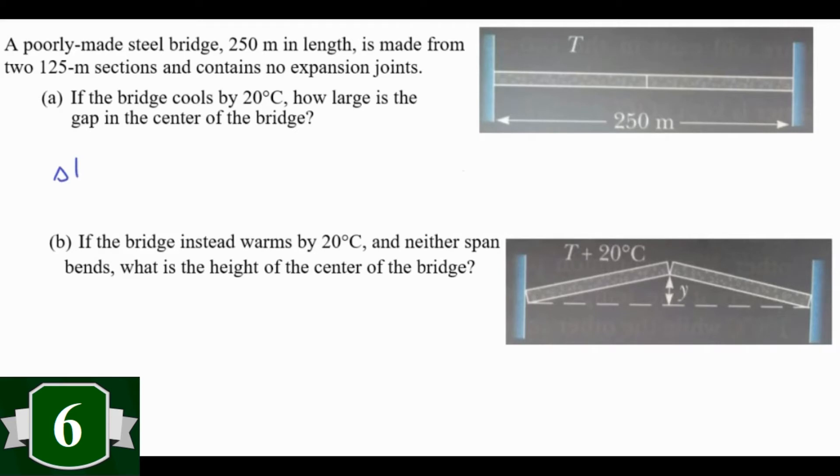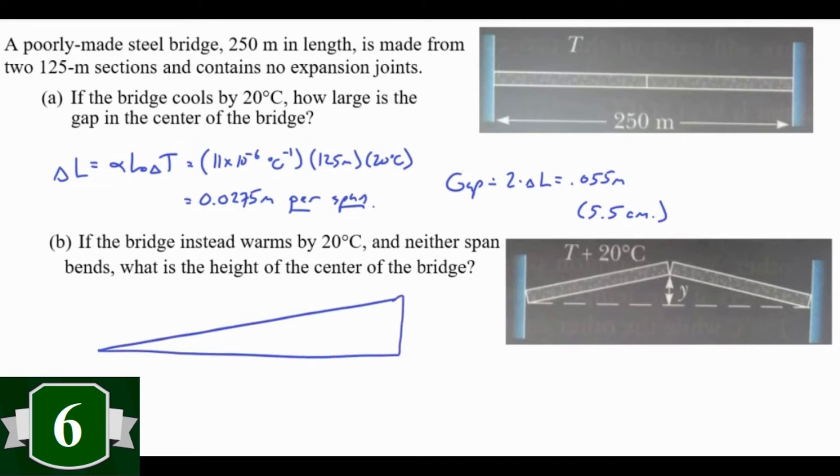Part A is just thermal expansion: Delta L equals alpha L naught Delta T. Plug in alpha for steel, plug in 125 and 20 degrees. We get 0.0275 meters per span. The gap is two spans, so double that to get 0.055 meters or 5.5 centimeters. For the second problem, that same math applies, only now we've made a triangle with a base of 125 and a hypotenuse of 125.0275. If we use the Pythagorean theorem and solve for height, we get 2.6 meters, which should make it really obvious why we use expansion joints in bridges and why this engineer is overpaid.